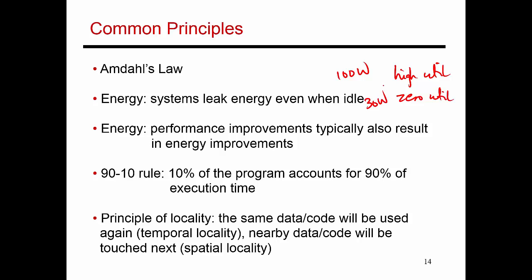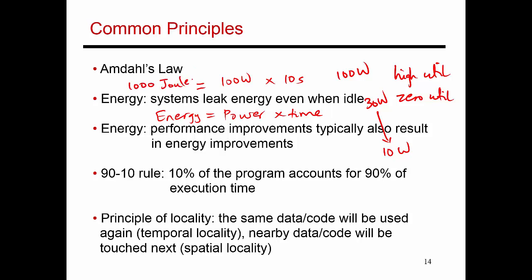If you observe that the system is at zero utilization, you can put it in some kind of deep sleep or hibernation mode, and that can reduce the 30 watts down to around 5 to 10 watts. Energy is nothing but power times time — so a system that consumes 100 watts and runs for 10 seconds to execute a given program ends up consuming 1000 joules of energy. If you improve performance, you're essentially reducing execution time, and that also ends up reducing energy consumption, since the program is just running more efficiently.